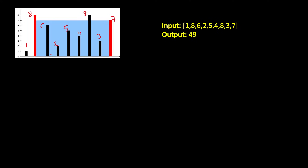Your task is to select any two bars between which you can fill water, such that the maximum area is covered. This is not a 3D container — you are looking from the side, trying to maximize the area, and you can multiply by width to get volume.